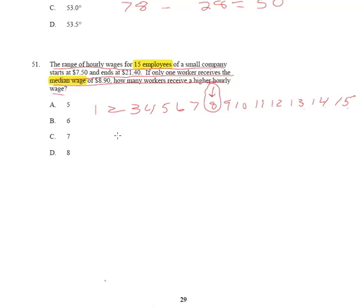Well, I've taken the liberty of writing out one through 15 employees. I know that the person in the middle is number eight because that's the middle number. Now, let's count how many people are above that person.